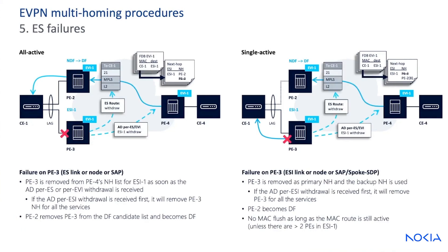Failure scenarios — this is where it gets interesting. A failure on PE3, whether it be an ES link, node, or the service access point, causes PE3 to be removed from PE4's next hop list for the ESI as soon as the AD per ES or per EVI withdrawal is received. If an AD per ESI withdrawal is received first, it removes PE3 as next hop for all the services, and PE2 becomes the DF. A failure on PE3 on the transport side: PE3 is removed as primary next hop and the backup next hop is used. If an AD per ESI withdrawal is received first, it removes PE3 for all services again. PE2 becomes the designated forwarder, and there's no MAC flush as long as the MAC route is still active, unless there are more than two PEs in ESI1.